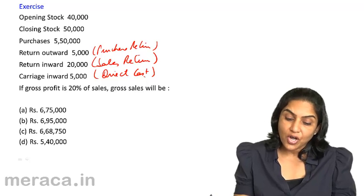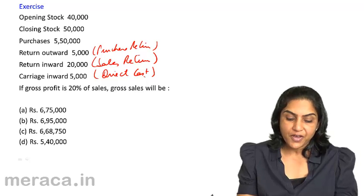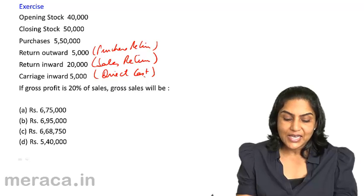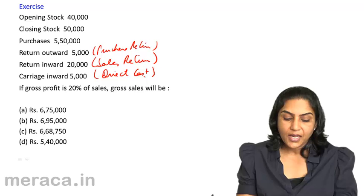Then gross sales would be: the options are (a) Rs. 6,75,000, (b) Rs. 6,95,000, (c) Rs. 6,68,750, (d) Rs. 5,40,000.